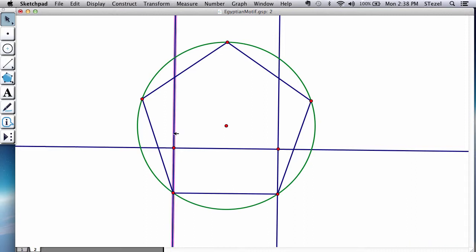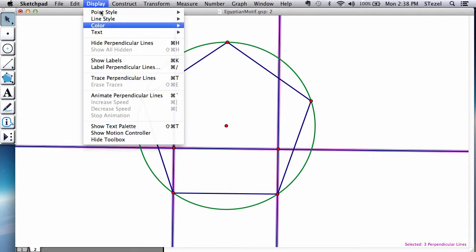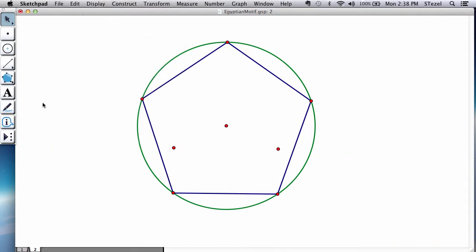And what I'm going to do is, so as we don't get too confused, I'm going to hide all these perpendicular lines. Display, hide them. And I'm going to manually join and create the rectangle.